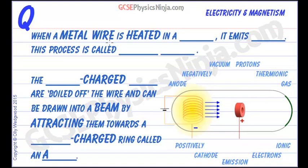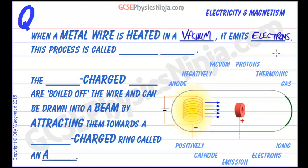When a metal wire is heated in a vacuum, such as in this chamber — if you remove all of the air and gas, that would be a vacuum — it emits electrons. This process is called thermionic emission.